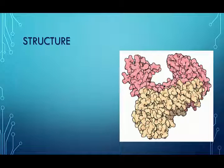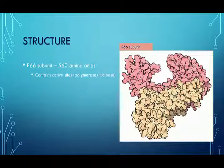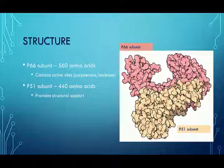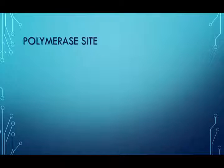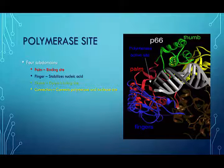Reverse transcriptase is a heterodimer comprised of two subunits, p66 and p51. The bigger subunit, p66, contains the active sites of the enzyme, while the smaller unit, p51, provides structural support to the protein. First, we'll discuss the polymerase site of the p66 subunit. The p66 subunit is comprised of four subdomains: the palm, finger, thumb, and connection. Together, they resemble a hand, which initiates the polymerization mechanism by opening and closing.